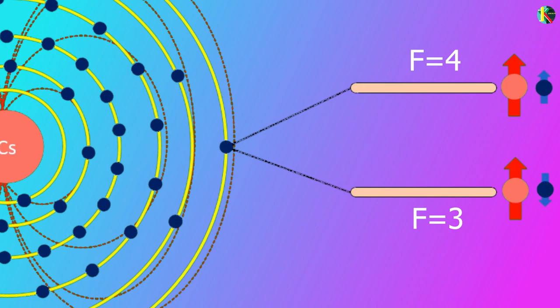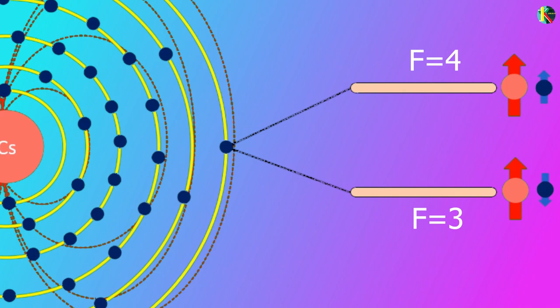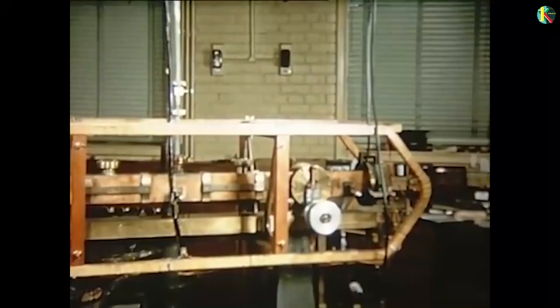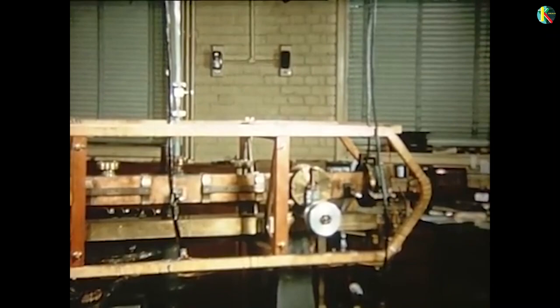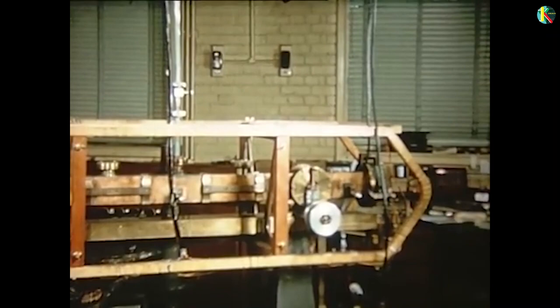The frequency of this transition is exactly this number. This is so accurate that it is also used as the international definition of a second. Since the 1950s, several methods have been used to make cesium atomic clocks. Most of them relied on the cesium beam technology.